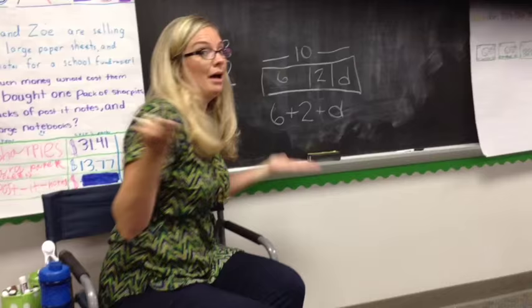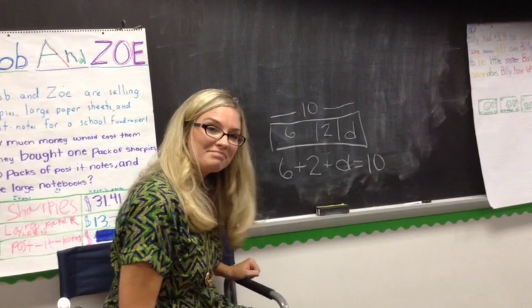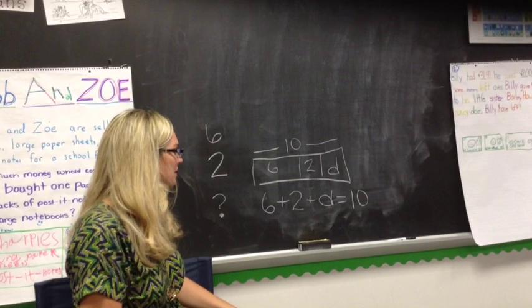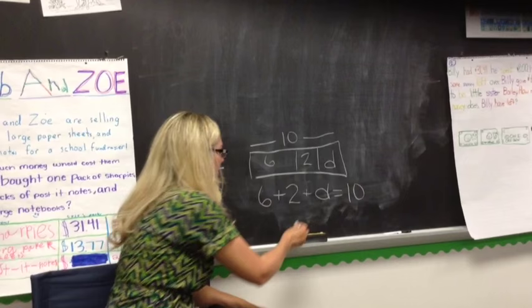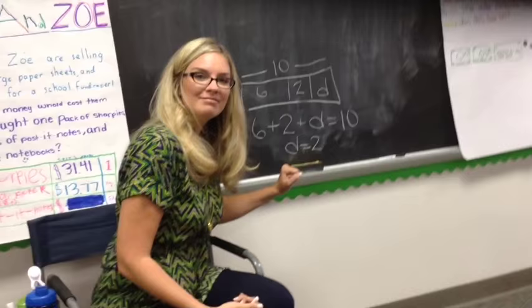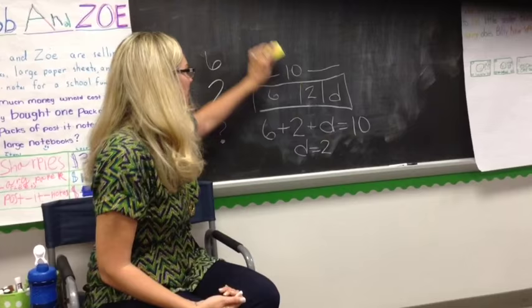This helps me solve the problem. So eight plus something equals ten. Well, since I'm missing a part, I can do subtraction. I can do the total minus what I already know. So ten minus eight is two, so I know that D equals two. And if I put it back into my equation, let's see if it makes sense. Six plus two is eight, plus two more. So D equals two.